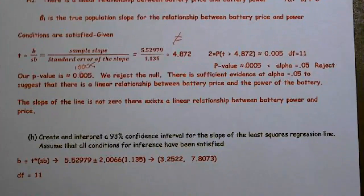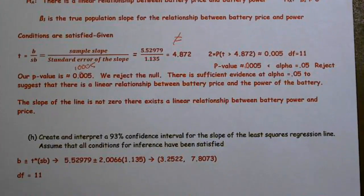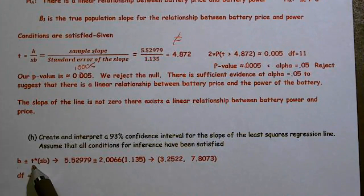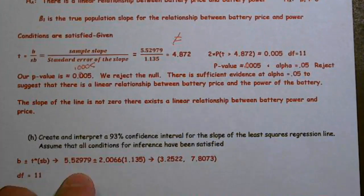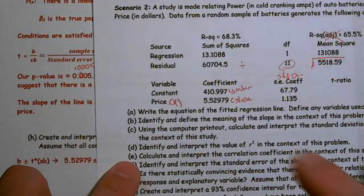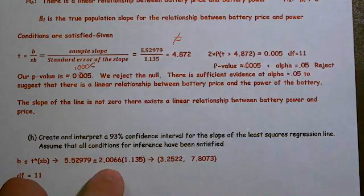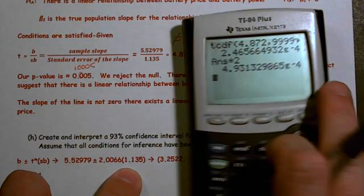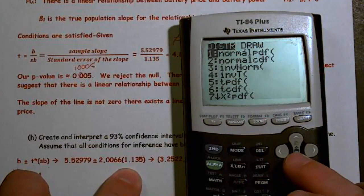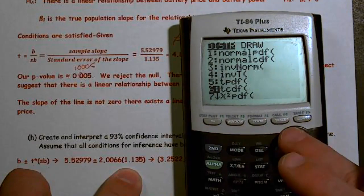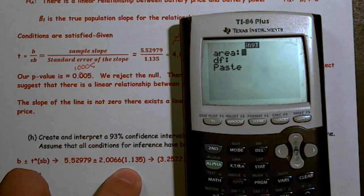Next thing, create a 93% confidence interval for the slope. Well, our slope is our sample slope plus or minus our T star times our standard error. Once again, slope and standard error came right off the table. Slope and standard error right there. But I need my T star. So I get that by going second VARS, inverse T, parenthesis, 1 minus 0.93 close parenthesis divided by 2. Degrees of freedom, 13 minus 2 or just plain old 11. And we get a T star of about 2.